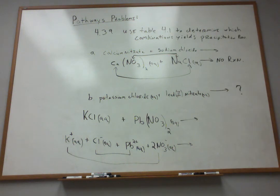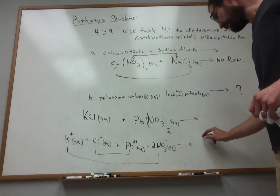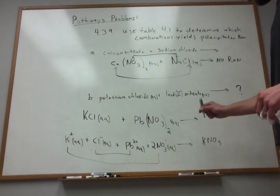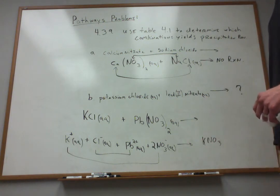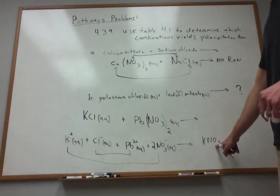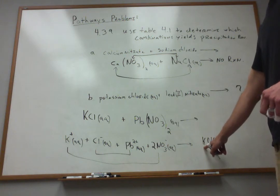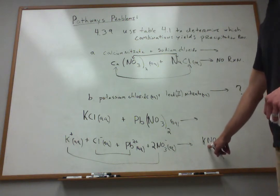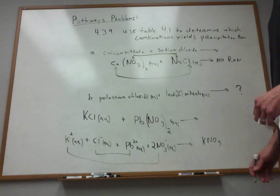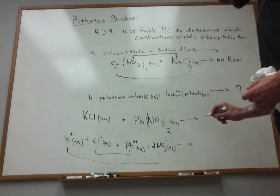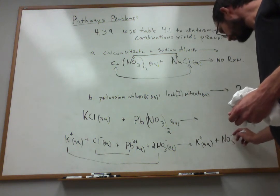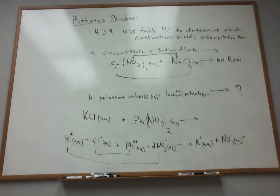The first possibility: if nitrate pairs up with potassium, I can make potassium nitrate, KNO₃ — K⁺ and NO₃⁻ in a 1-to-1 ratio. Is this compound soluble or insoluble? Potassium is a group 1 metal, and salts of group 1 metals are always soluble. Same thing with nitrate — all nitrate salts are soluble. So KNO₃ is certainly soluble. It's not going to exist as a solid; those ions are just going to keep floating around as aqueous ions. Nothing changes.